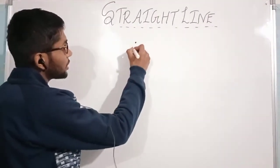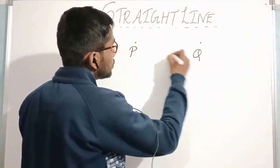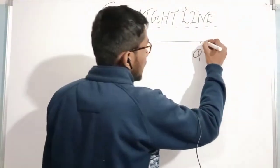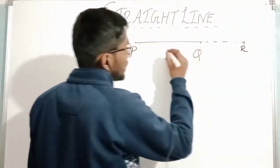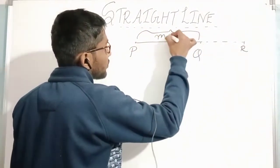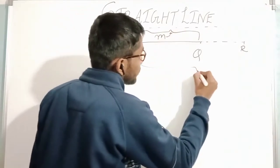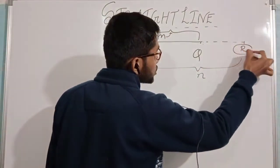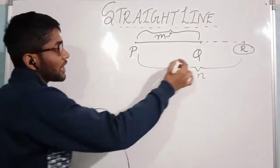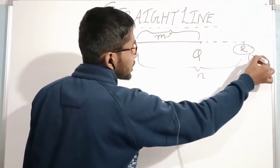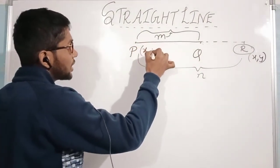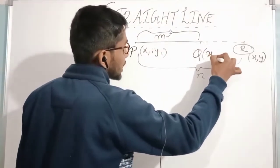External division का मतलब है — let's suppose P और Q एक straight line बना रहे हैं, और कोई point R इस line पर बाहर की तरफ है जो P और Q को m ratio n में externally divide करता है। P के coordinate हैं x1, y1 और Q के coordinate हैं x2, y2।